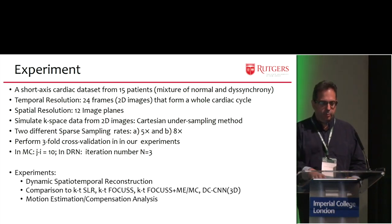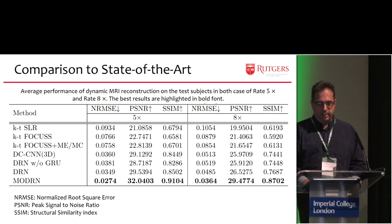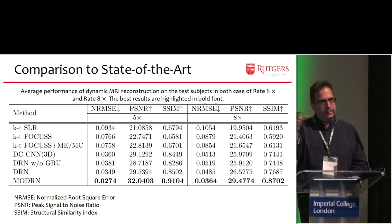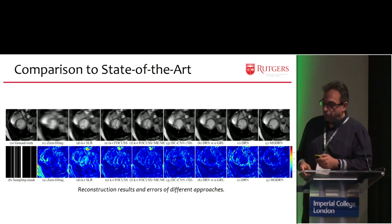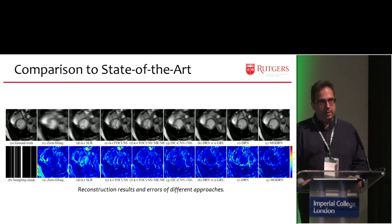In the experiment, we do the spatiotemporal reconstruction and compare it to previous methods. Based on the normalized root mean square error, the peak signal-to-noise ratio, and the structural similarity index, this method performs better than all previous methods because it uses neural nets and the movement between frames. This shows some reconstructions — you can see how much clearer it is compared to the ground truth — and you can see the other methods based on published code.